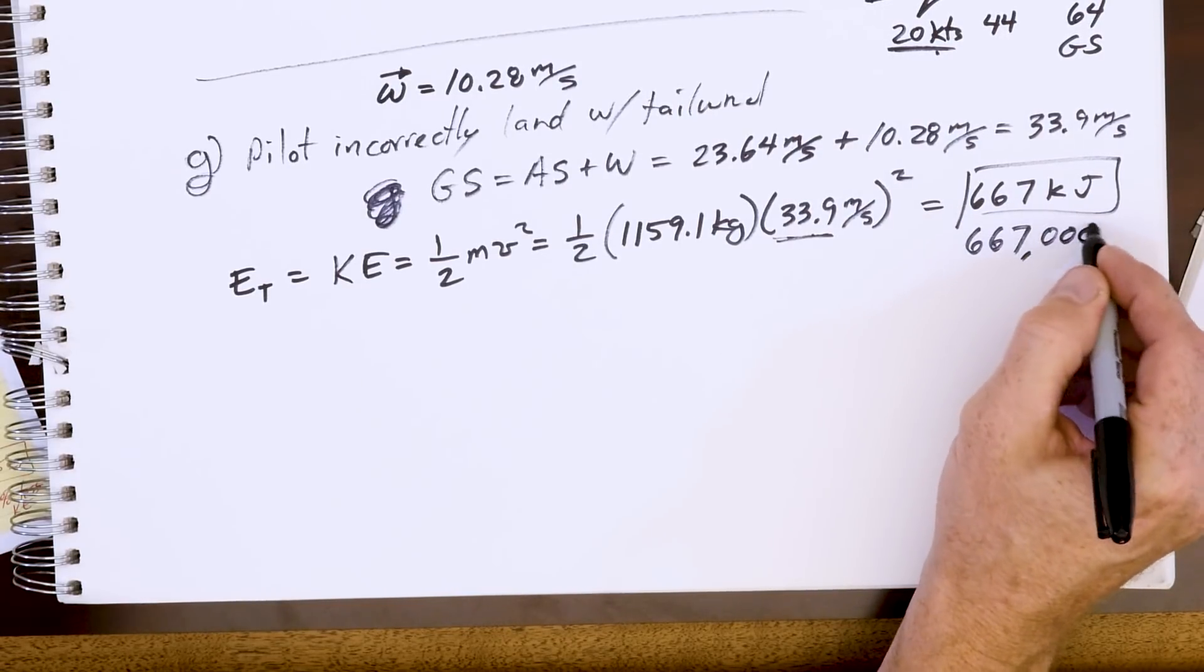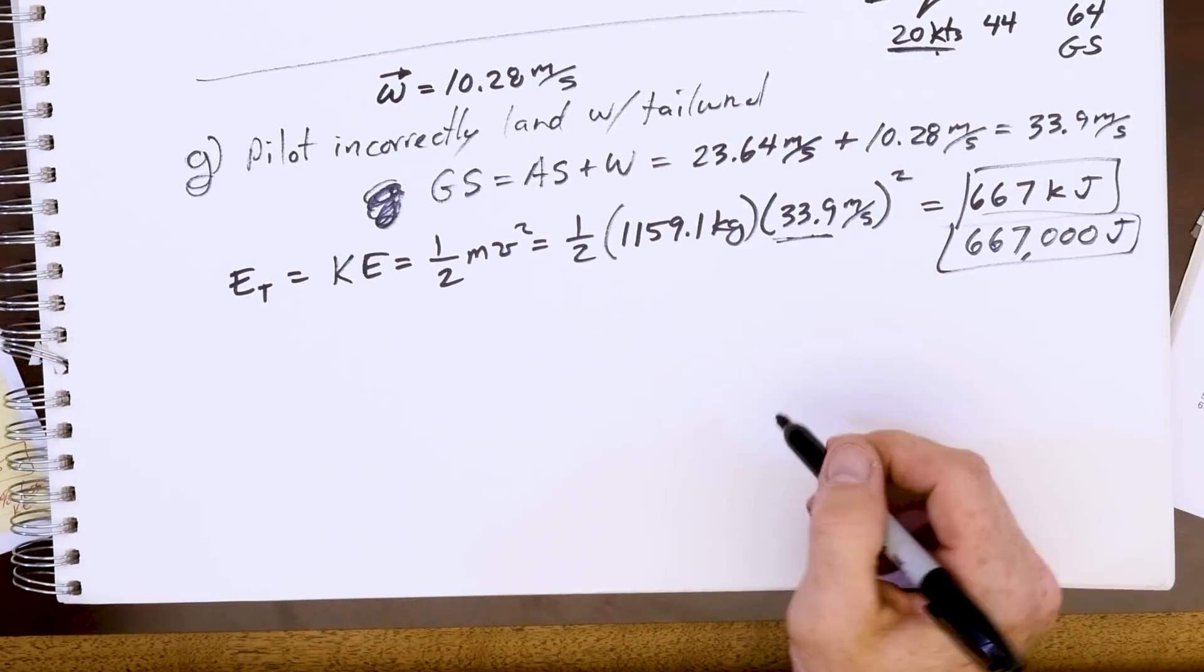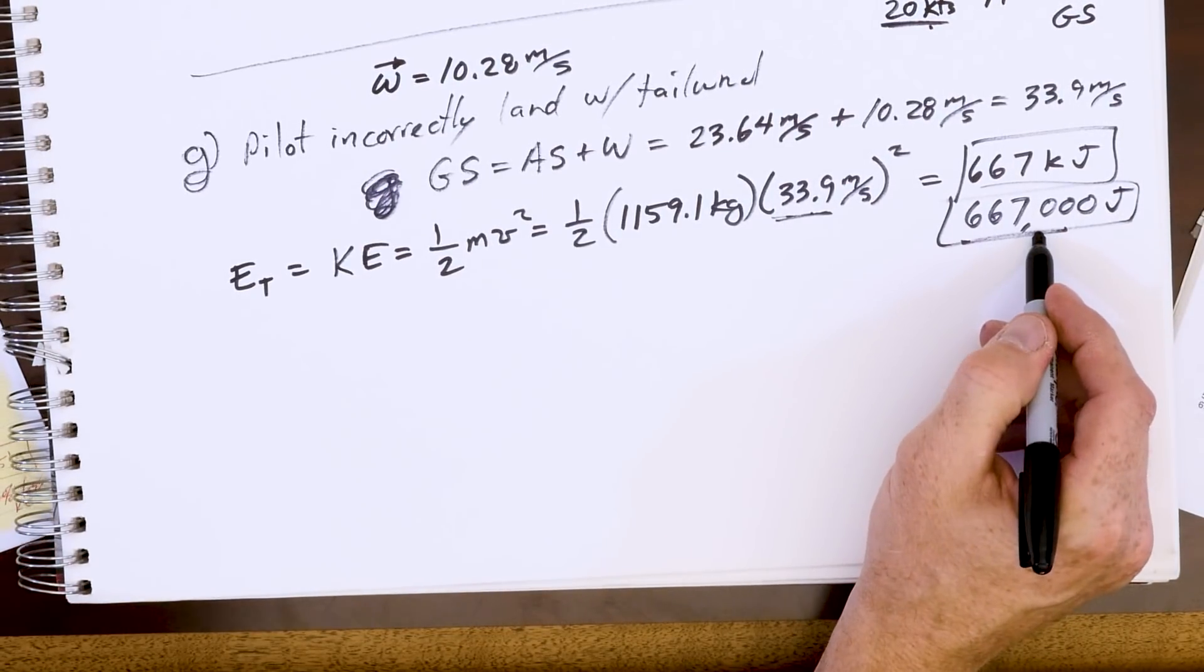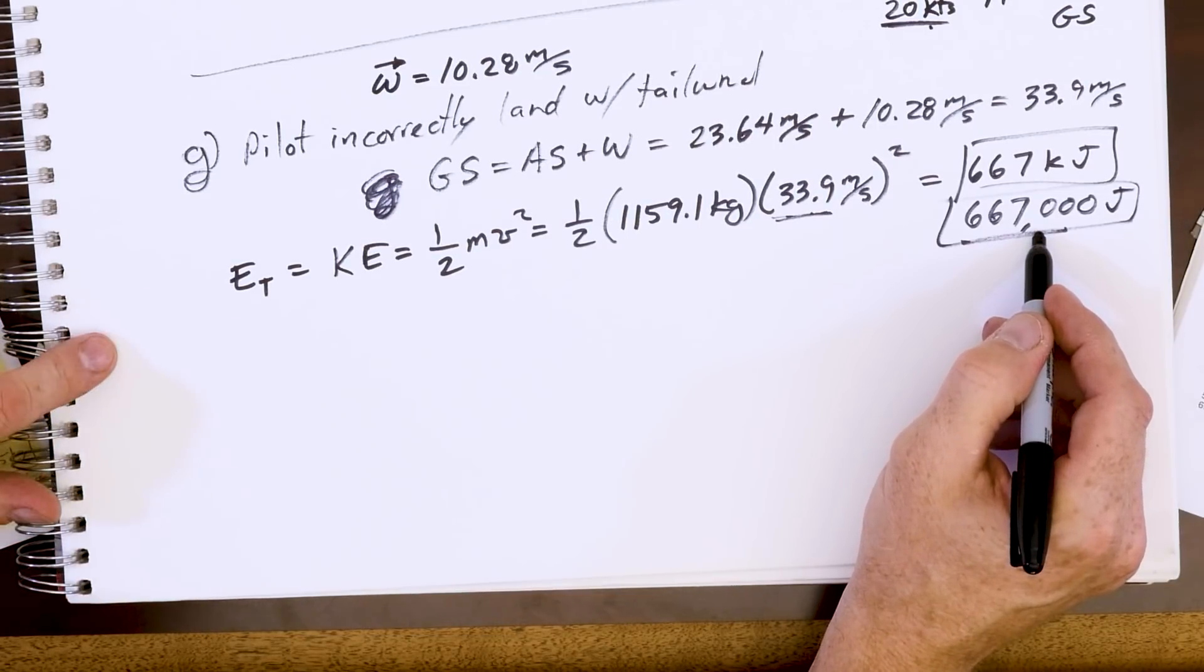667,000 joules. We're definitely a lot less energy than we had before with our 1-point-something megajoules. We've gotten rid of a lot of energy, but we could have done a lot better if the pilot correctly landed with a headwind.